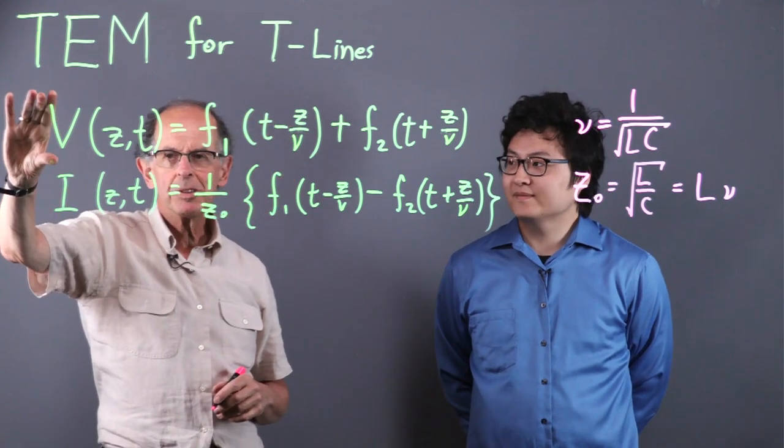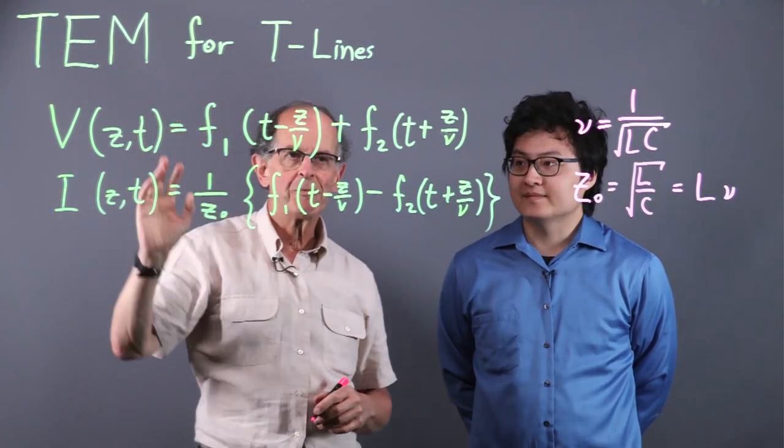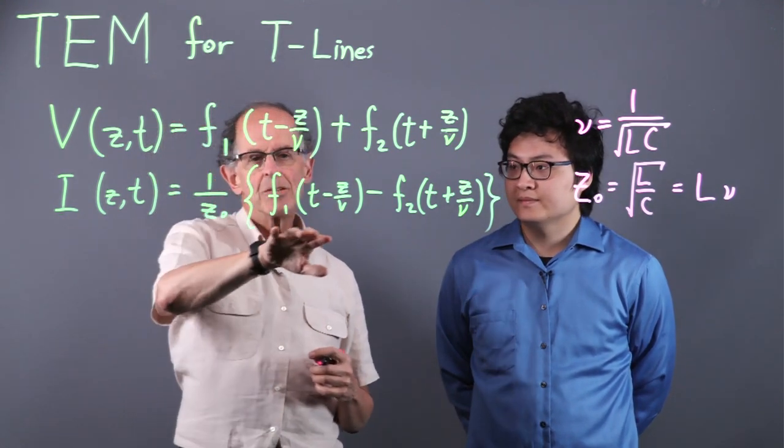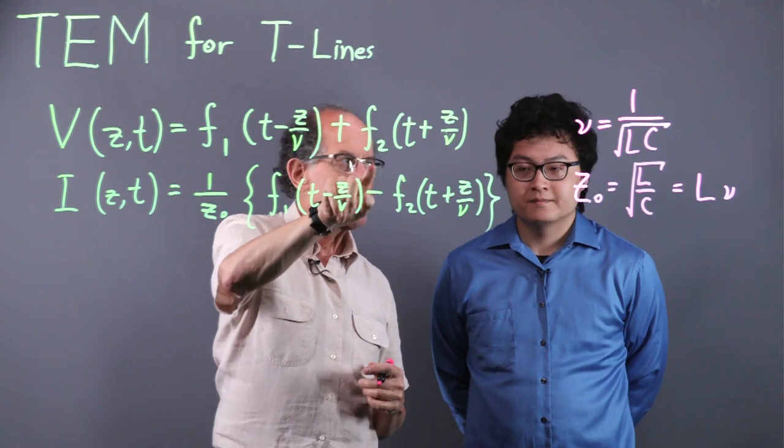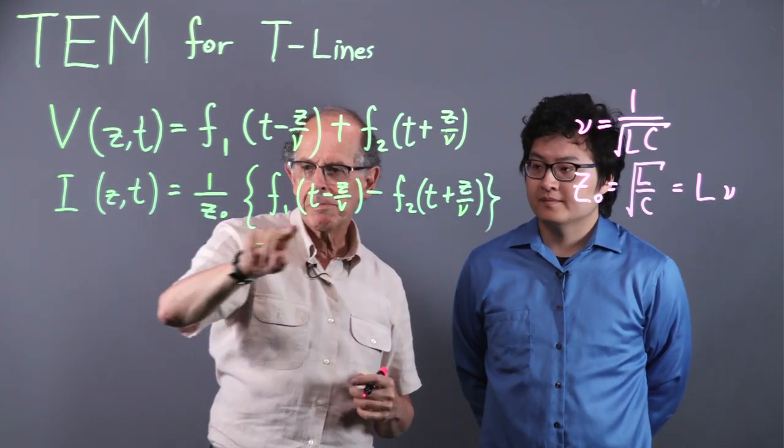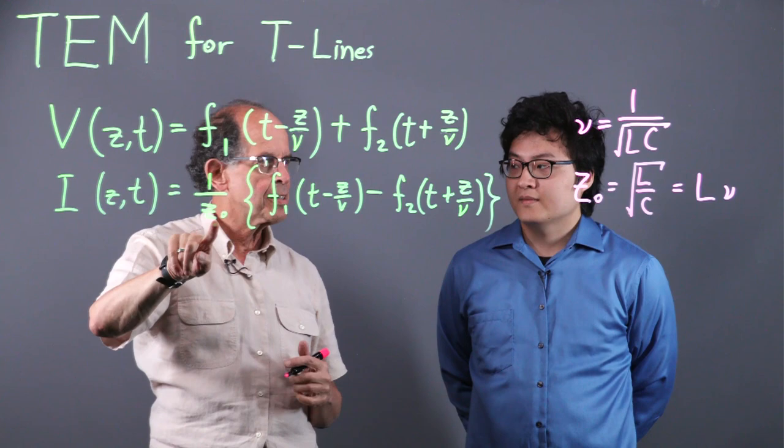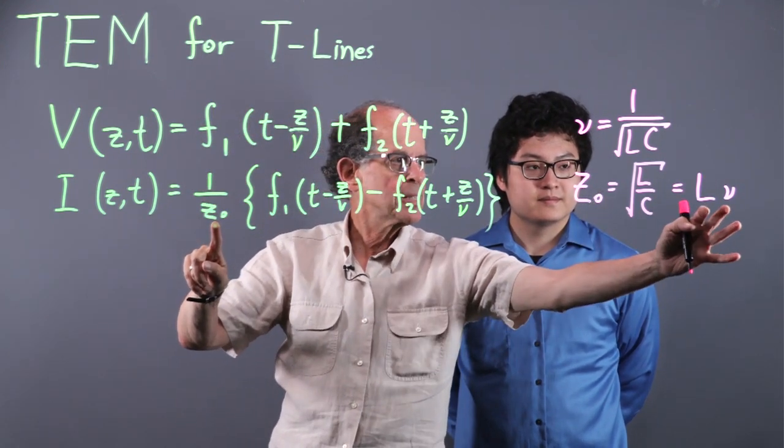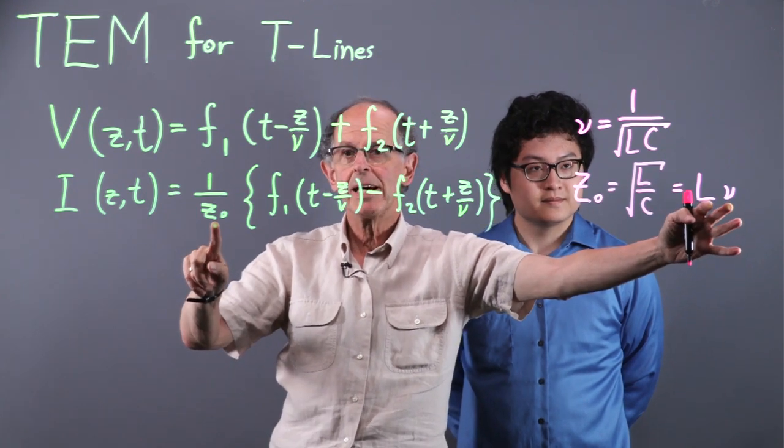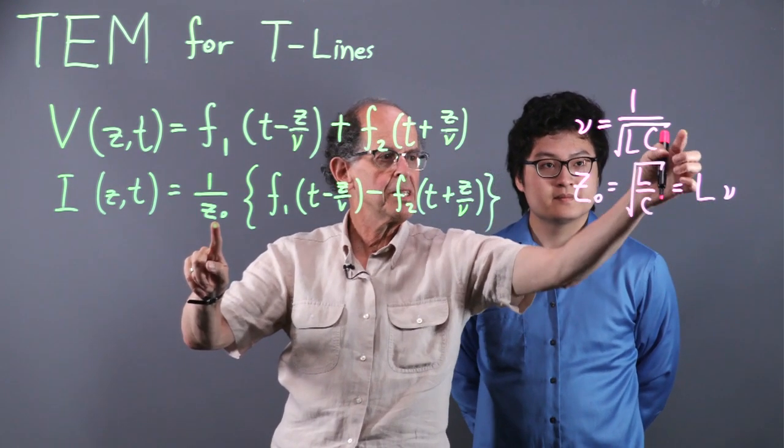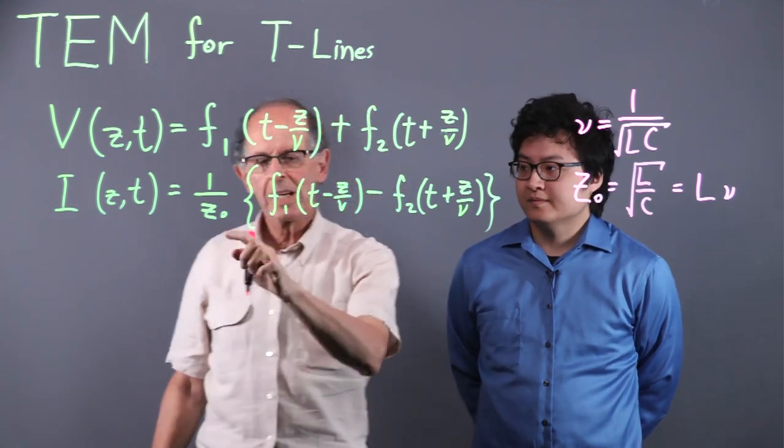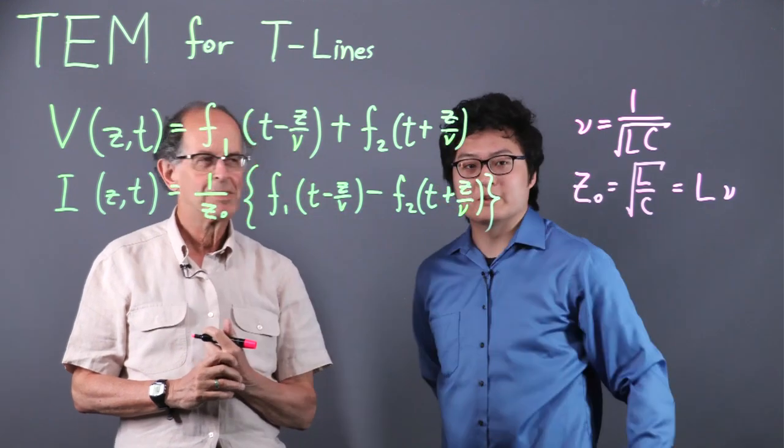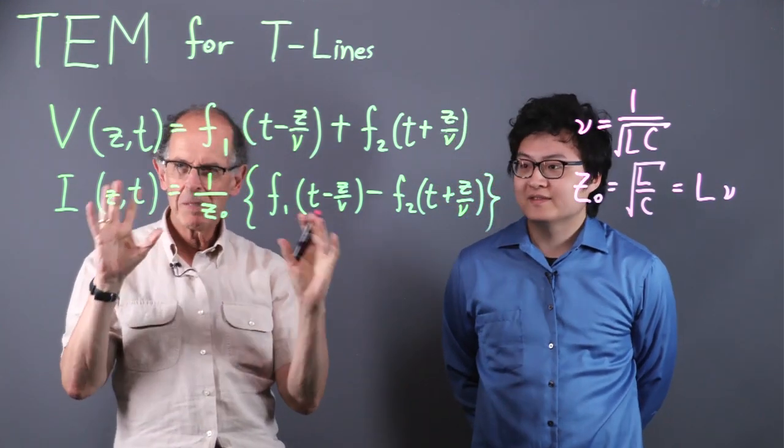So we have a voltage along the line is the sum of forward and backward traveling waves. And the current is the difference of those. This minus sign is really important to remember, but we also have to divide by Z-naught. Z-naught is the characteristic impedance we had calculated previously as LV. And if you substitute in for V, we get this. So that's what Z-naught is. And don't forget a small V is velocity and big V is voltage.